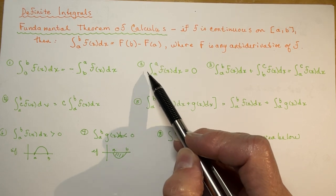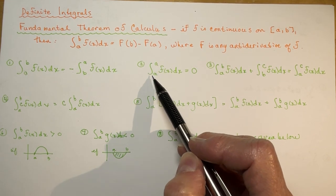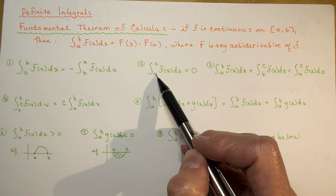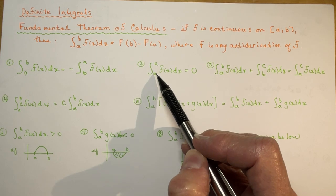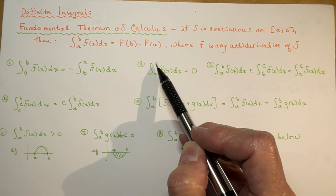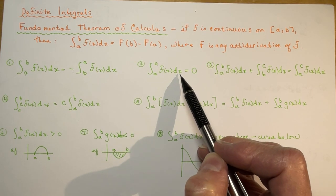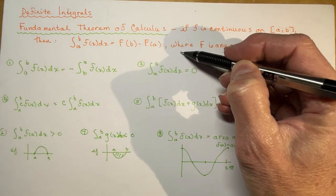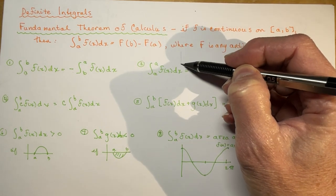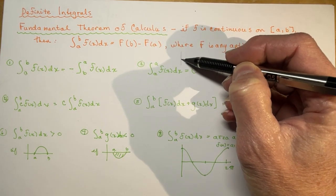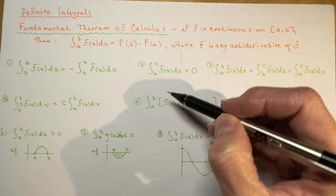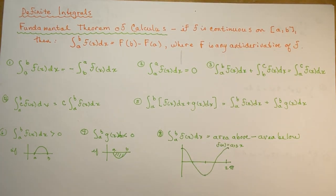Rule 2 says that if I have a definite integral with the same boundary — a to a — the area is going to be 0. Because basically you're talking about the area under a point, a straight line basically. There's no area to it, so that's why the area is equal to 0.